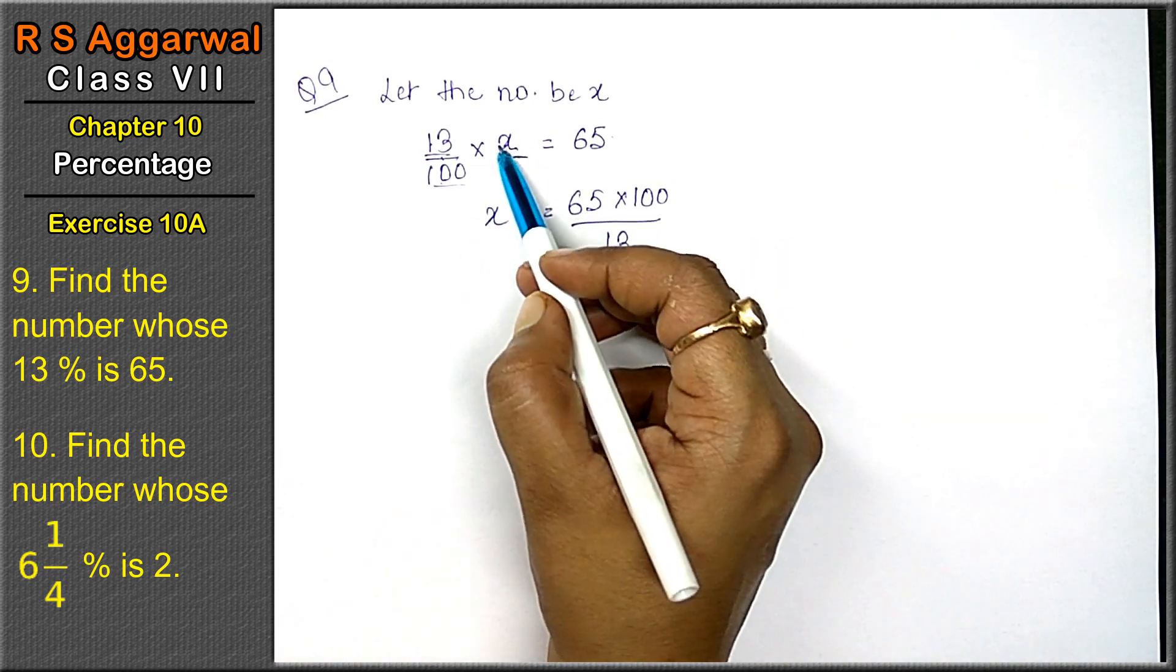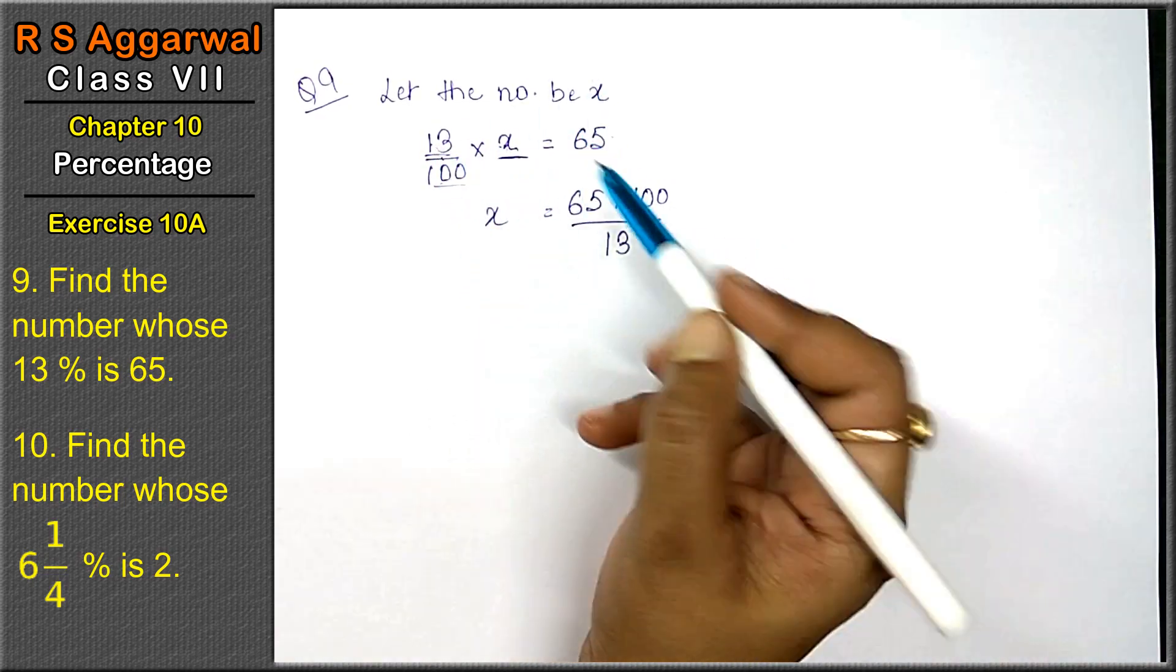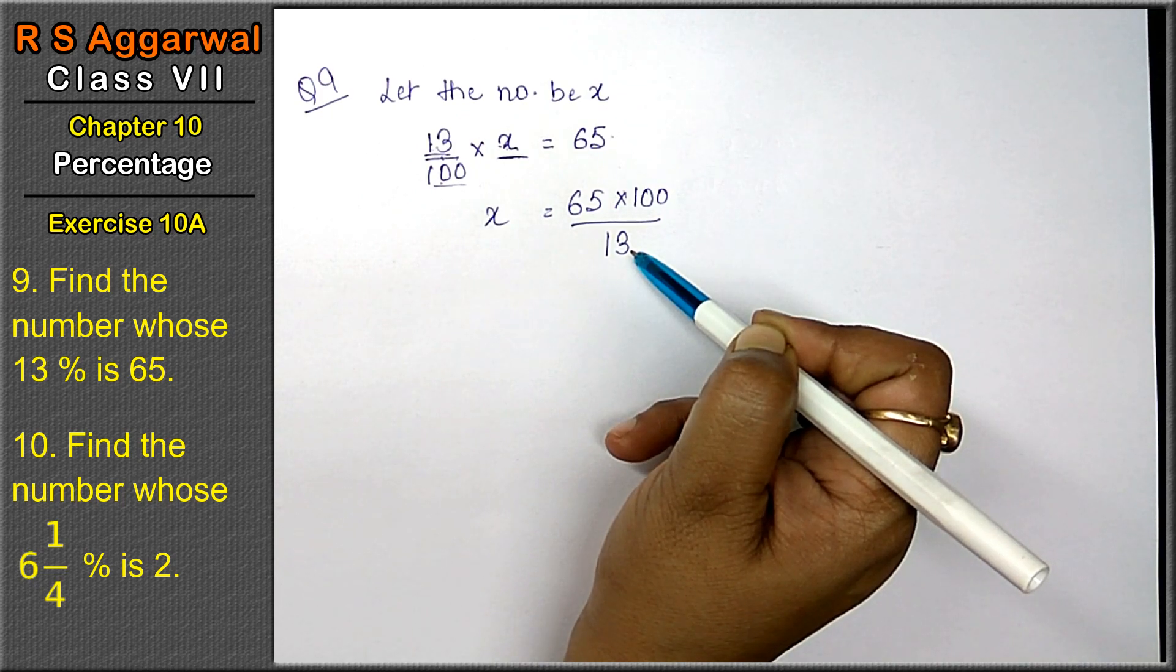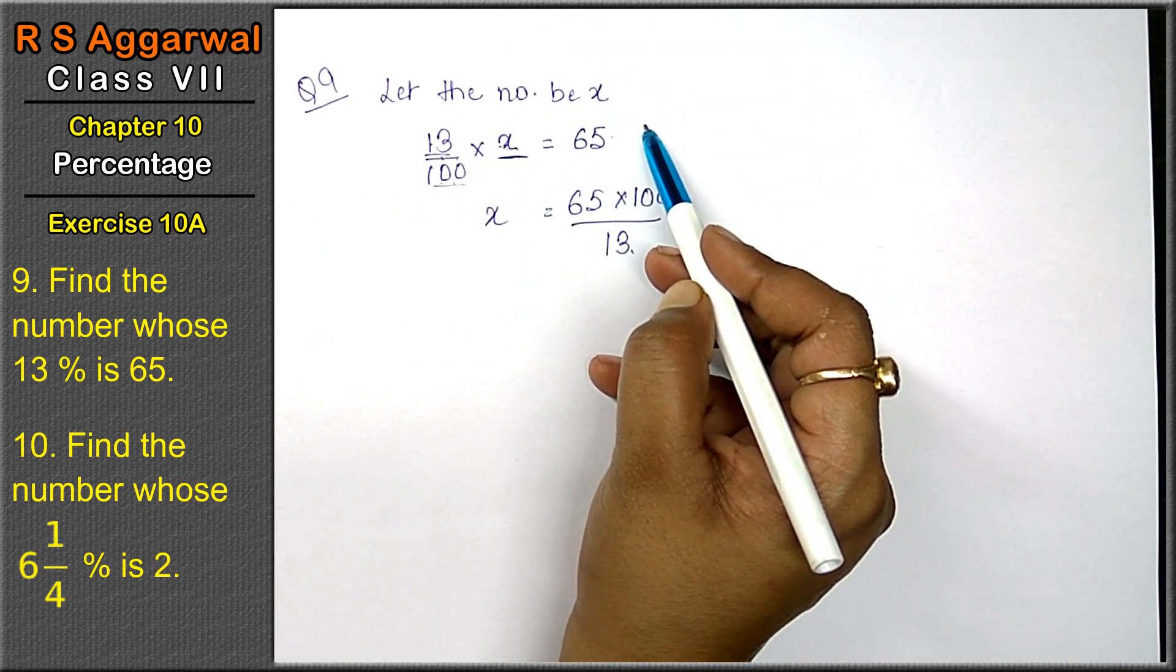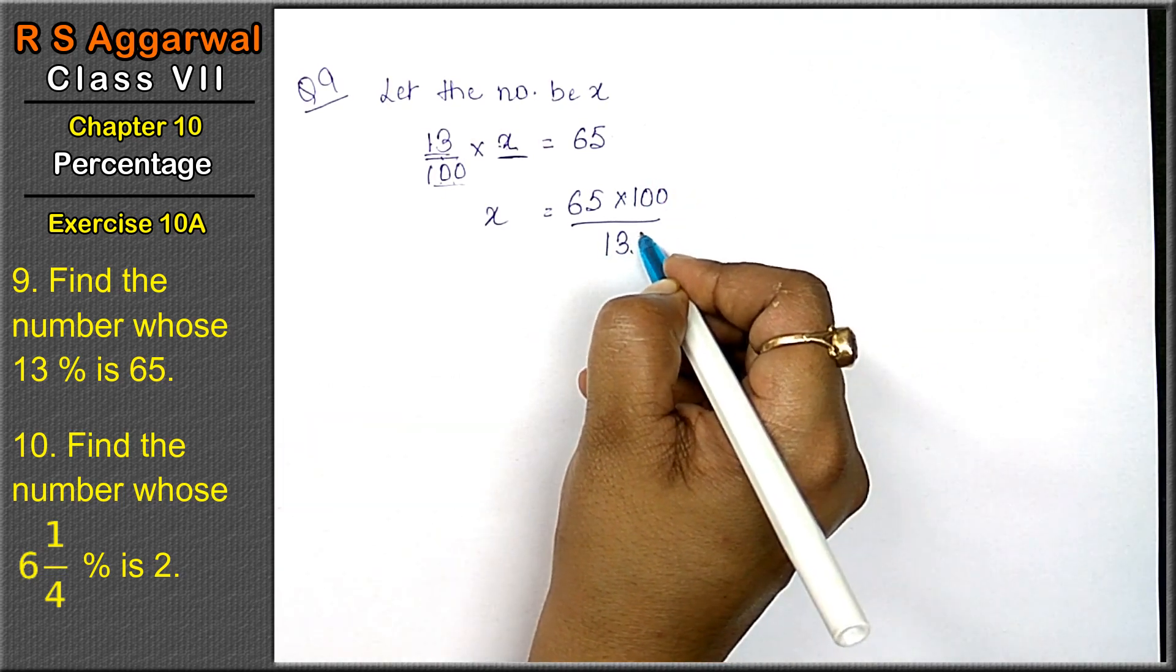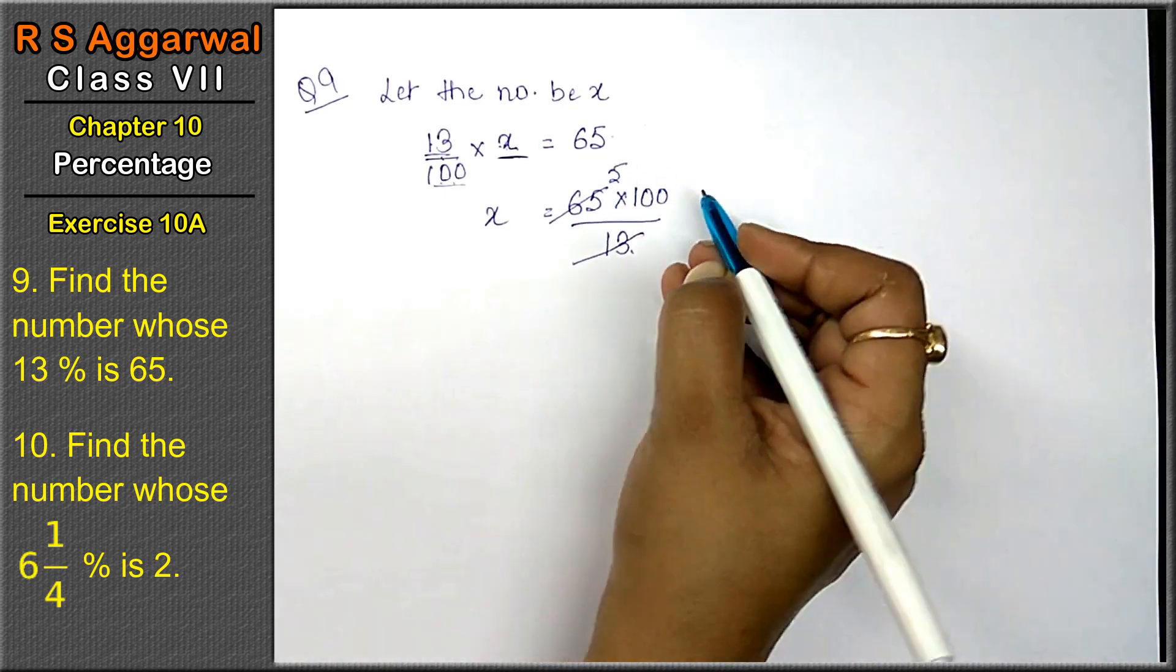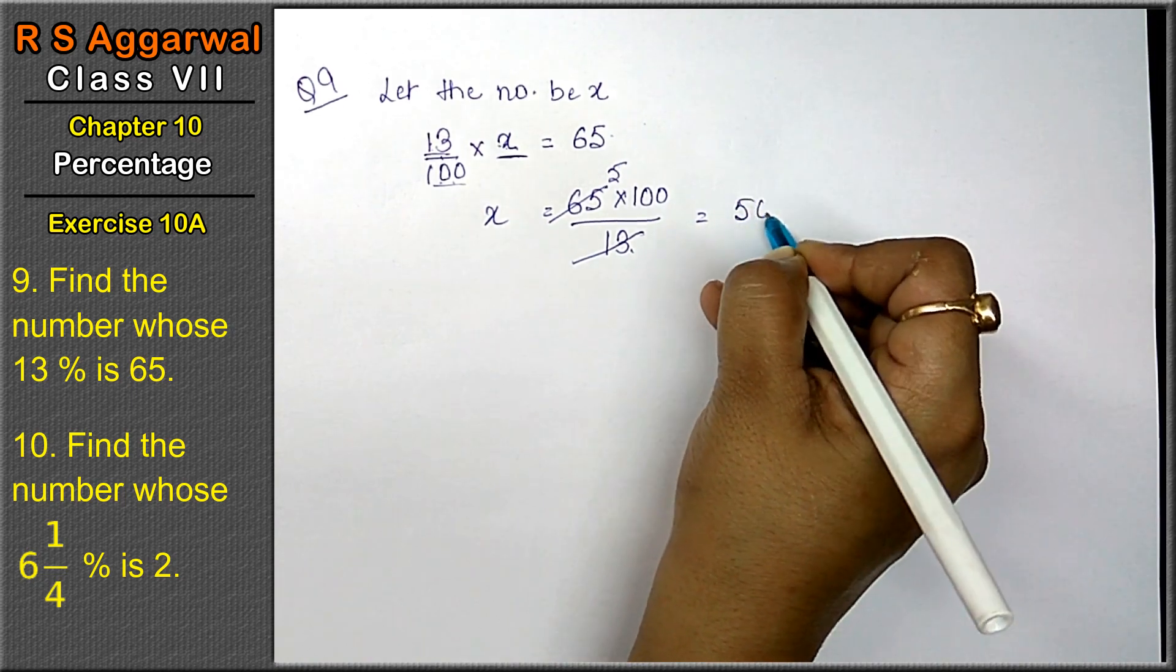Friends I repeat, the number is in the numerator, it will be in the denominator. Right friends? 13 ones are 13, 13 fives are 65. The answer will be 500.